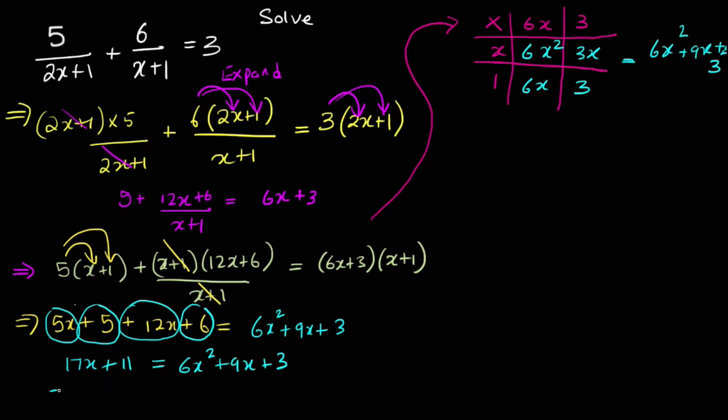But before we can factorize, we have to put the terms in one side and make the quadratic equation equal to 0. So how do we do that? Minus 17x. That cancels out. So 11 equals to 6x squared plus 9x plus 3 minus 17x. We need to simplify now. 9x minus 17x is minus 8x. So 11 equals to 6x squared minus 8x plus 3. Finally we need to get rid of the 11. Minus 11 both sides. That cancels out. That's 0. 6x squared minus 8x minus 8.